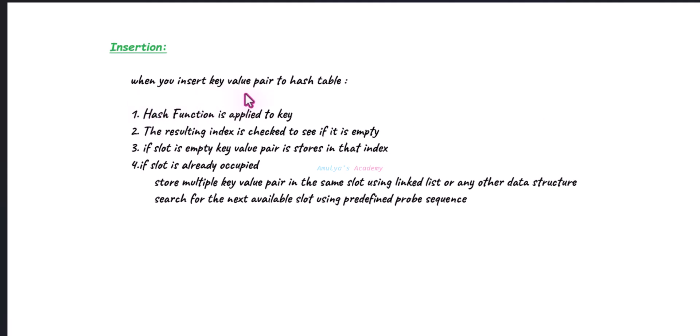When you want to insert a key-value pair to a hash table, the first step is the hash function is applied to the key. Then the resulting index is checked to see if it is empty or not. If the slot is empty, the key-value pair is stored in that index. And if the slot is already occupied, that means there is a collision.